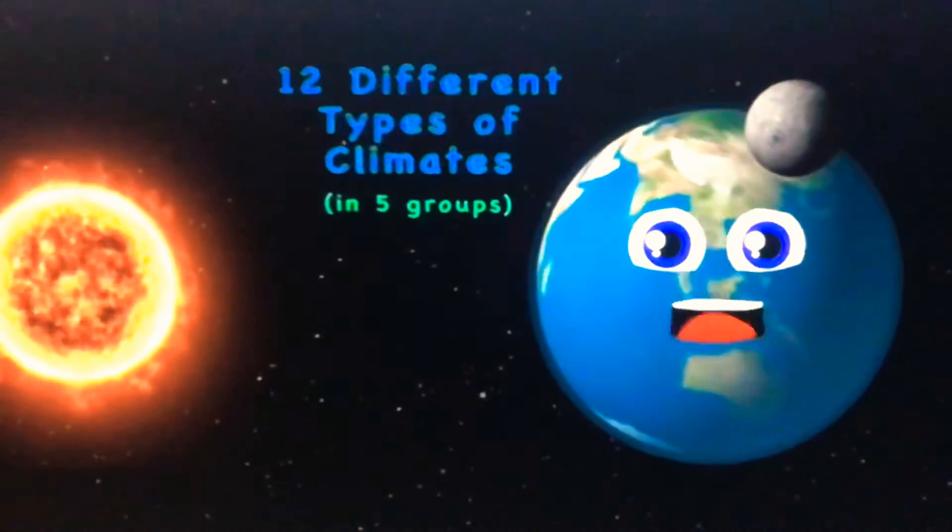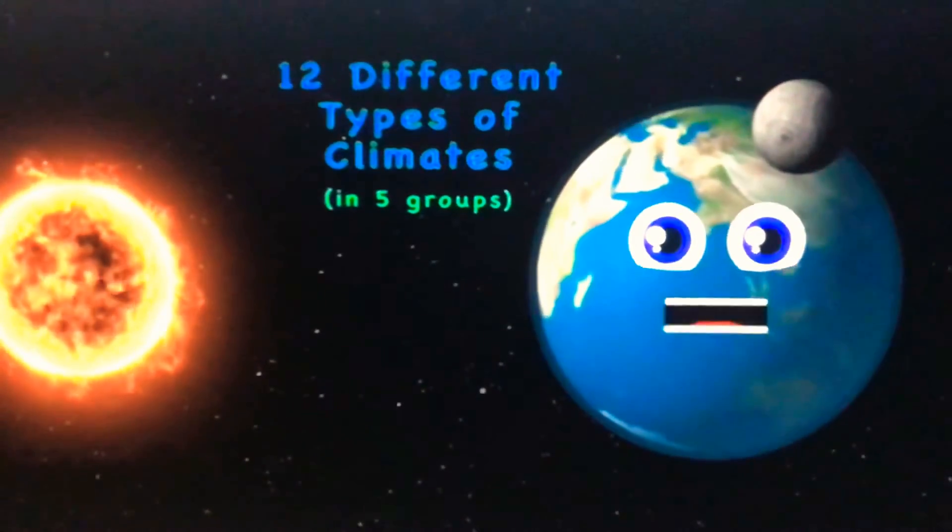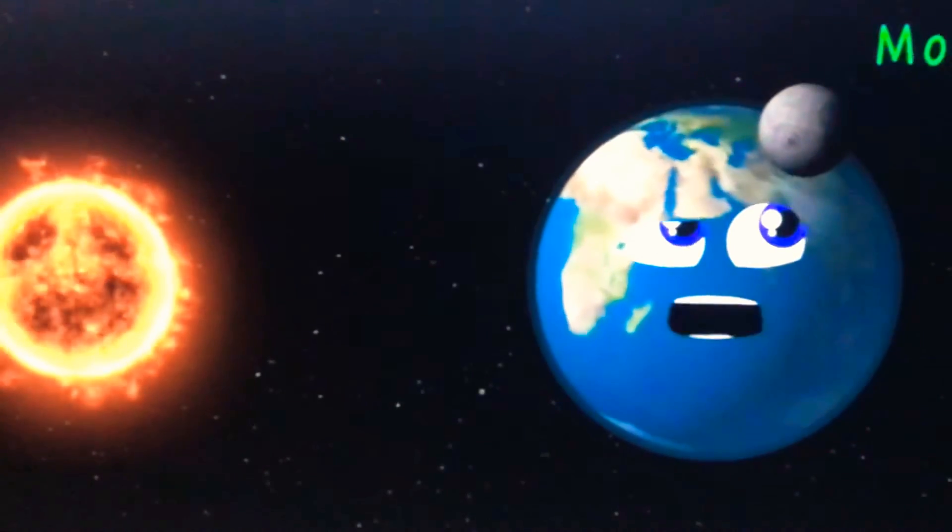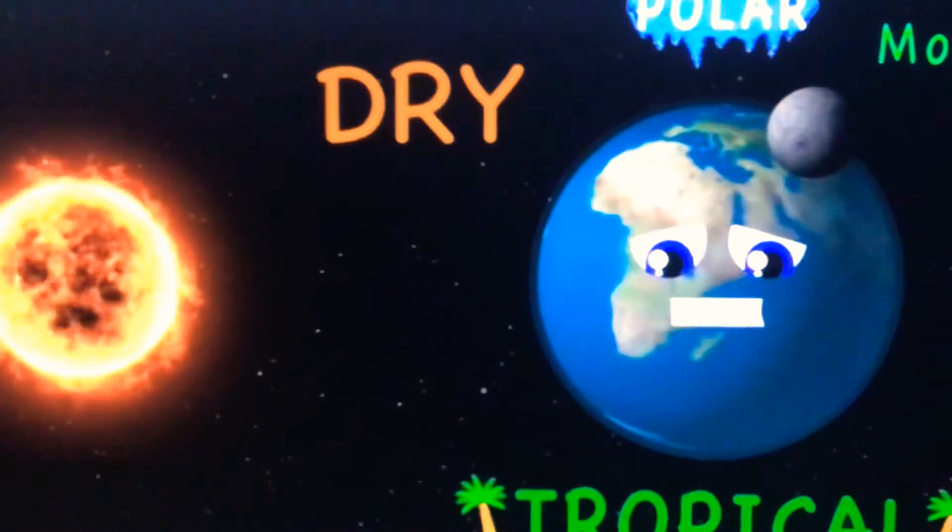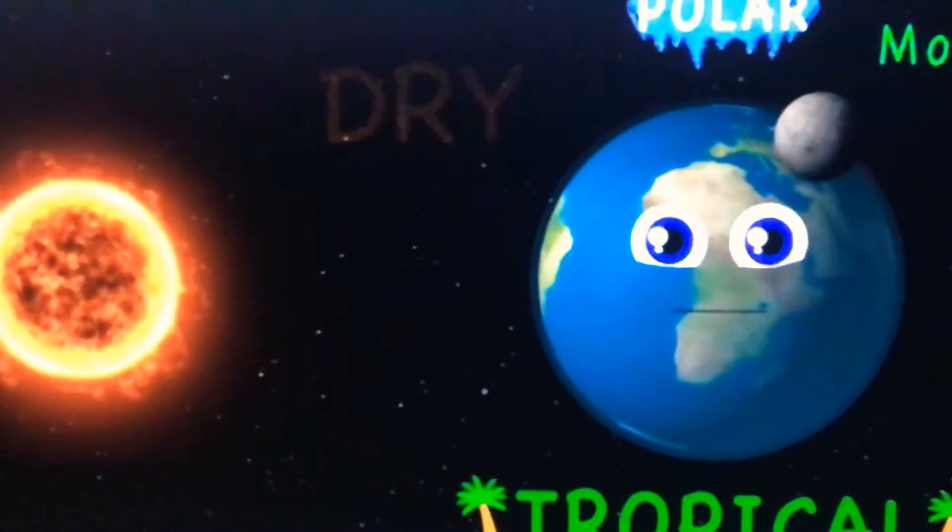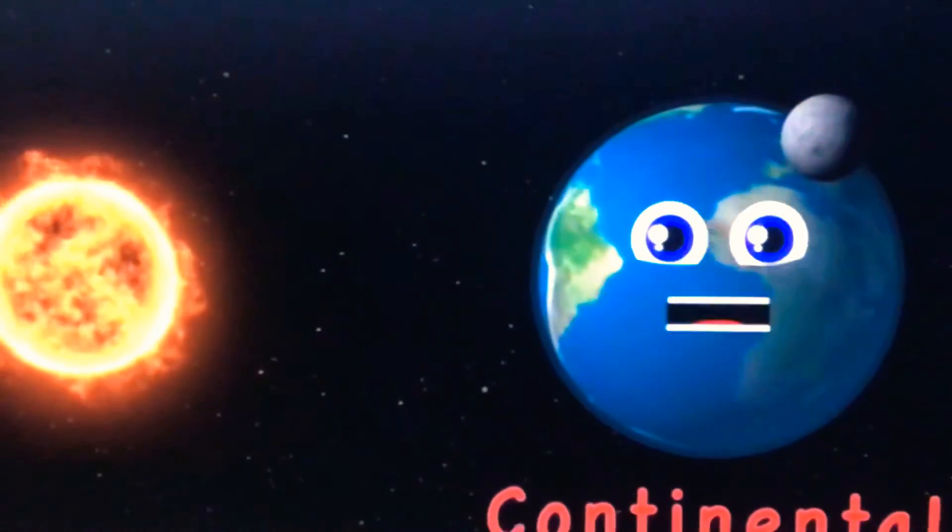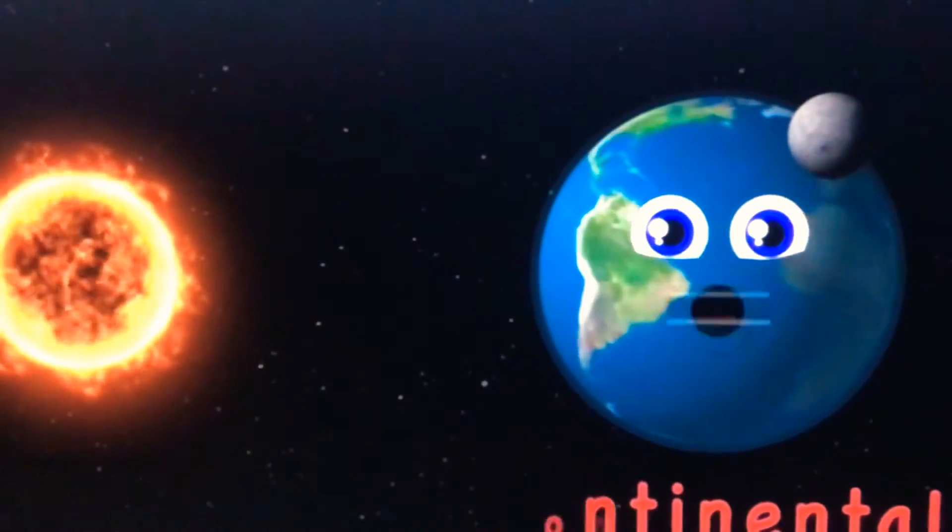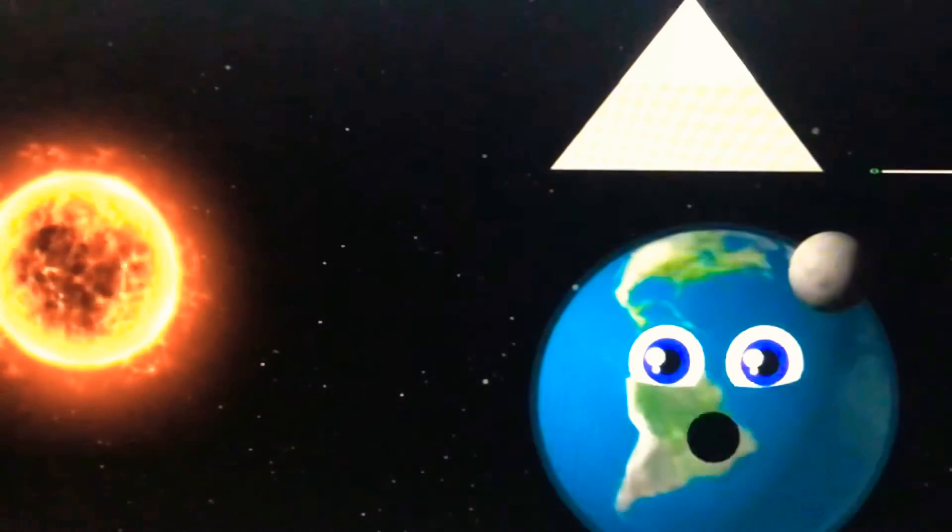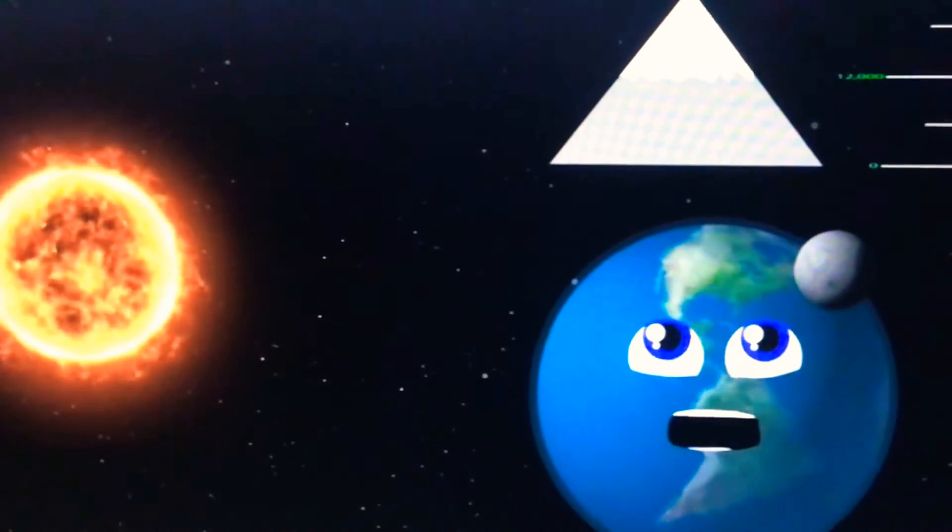There are 12 different types of climates that exist on me: moderate, polar, dry, and tropical are four groups you see. Then there is continental, it is the fifth category. One climate in no group is highland, way above the sea.